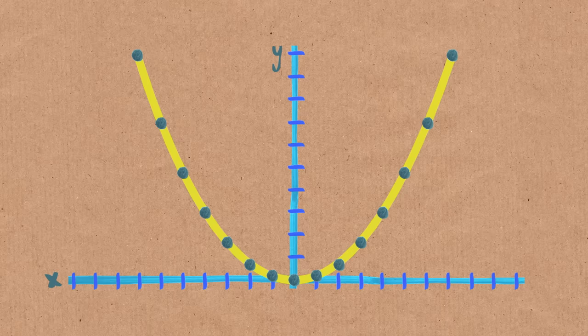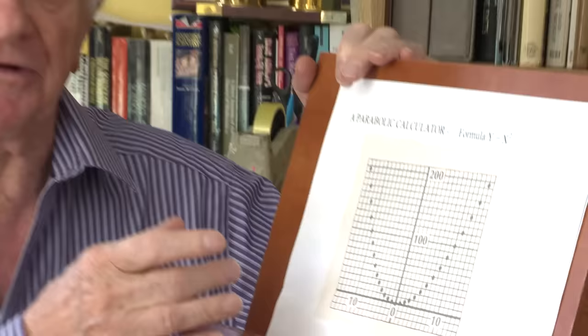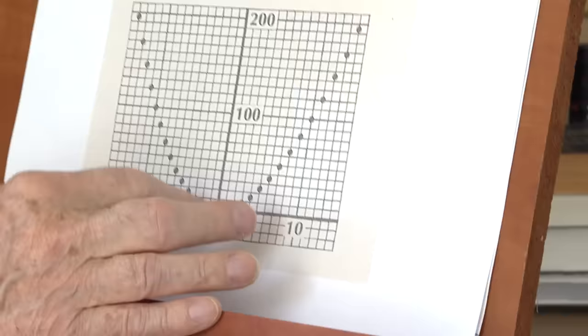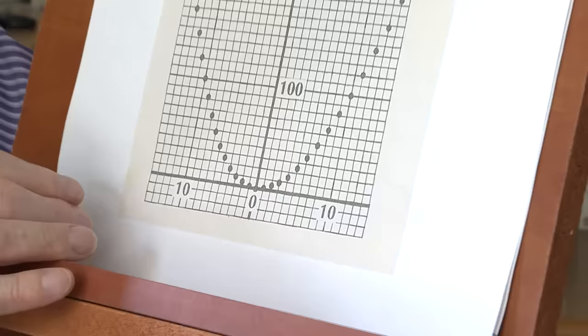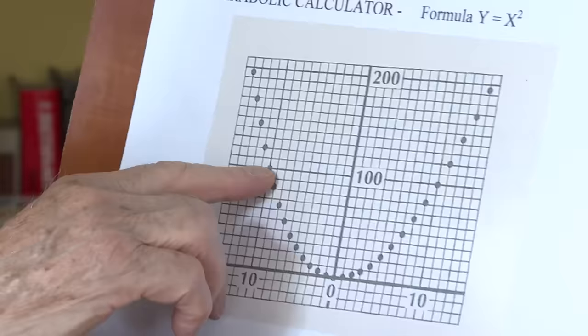Archimedes would never have seen this parabola. They didn't have algebra in his day, and they didn't have graphs in his day. However, this is a parabola and it's generated by this formula y equals x squared. And the y-axis is going up ten times as fast as the x-axis is going along. So if x is 10, y would be 100. And that's there, corresponds to the y. So all these dots are generated like that and you've got a parabolic curve.